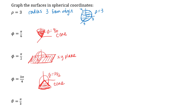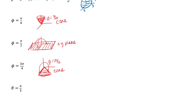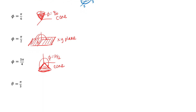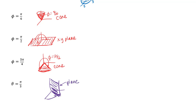For the last surface, theta equals pi over 3 — since theta works the same as in cylindrical coordinates, think of a door on a hinge. Starting in the positive XZ plane and rotating through an angle of pi over 3, the result is a half-plane containing the Z axis at that angle.